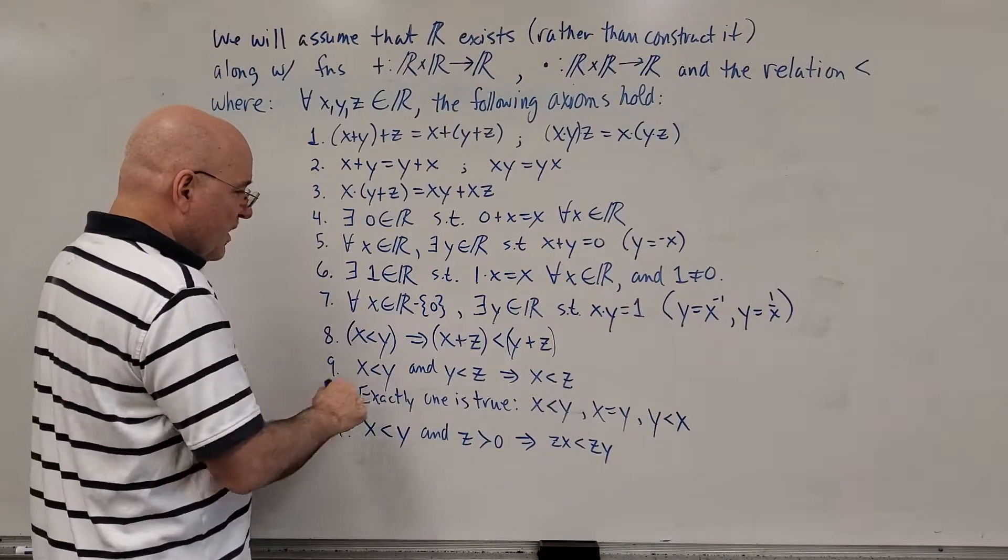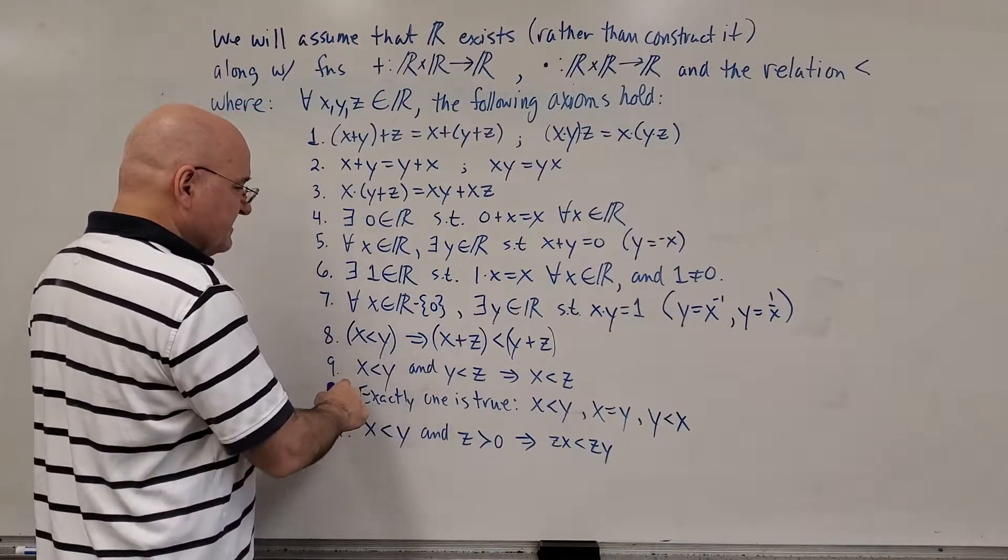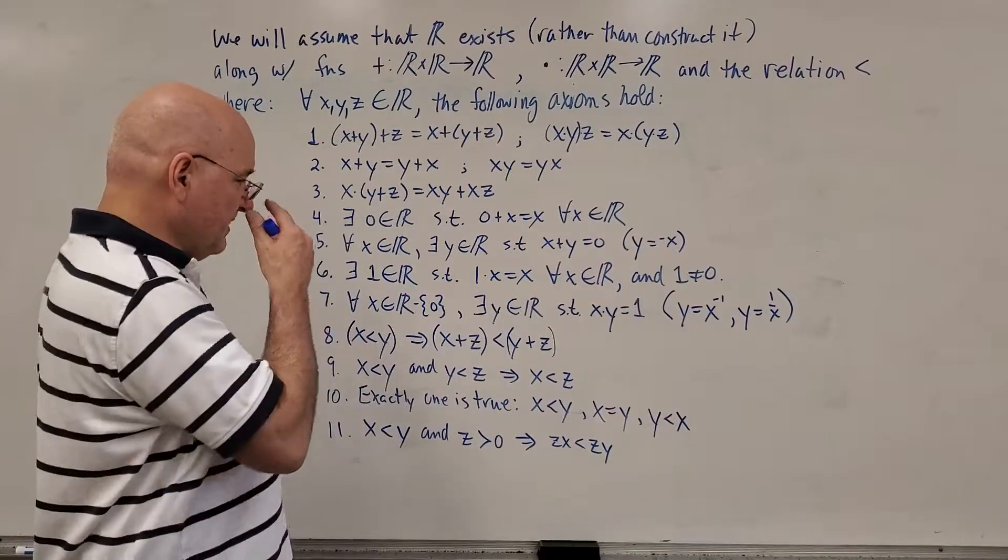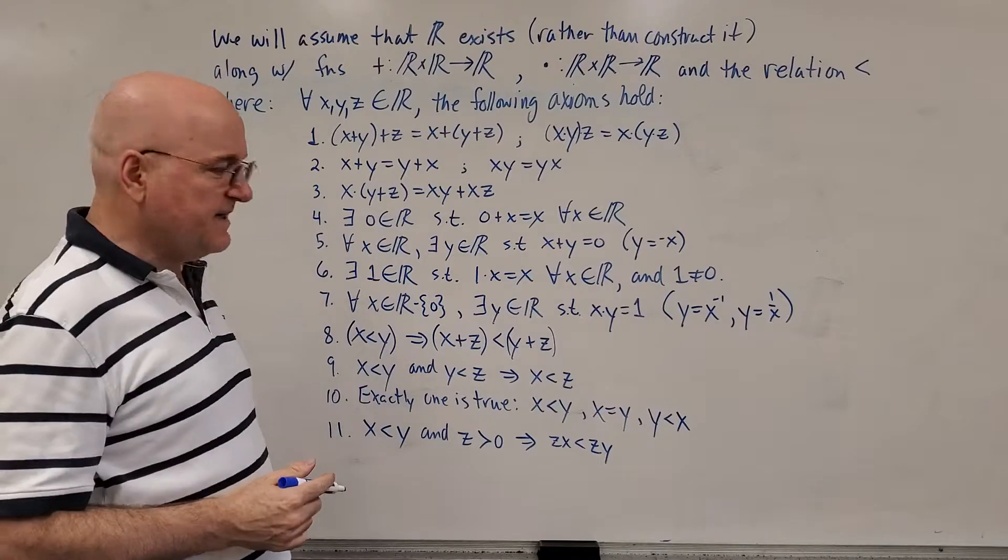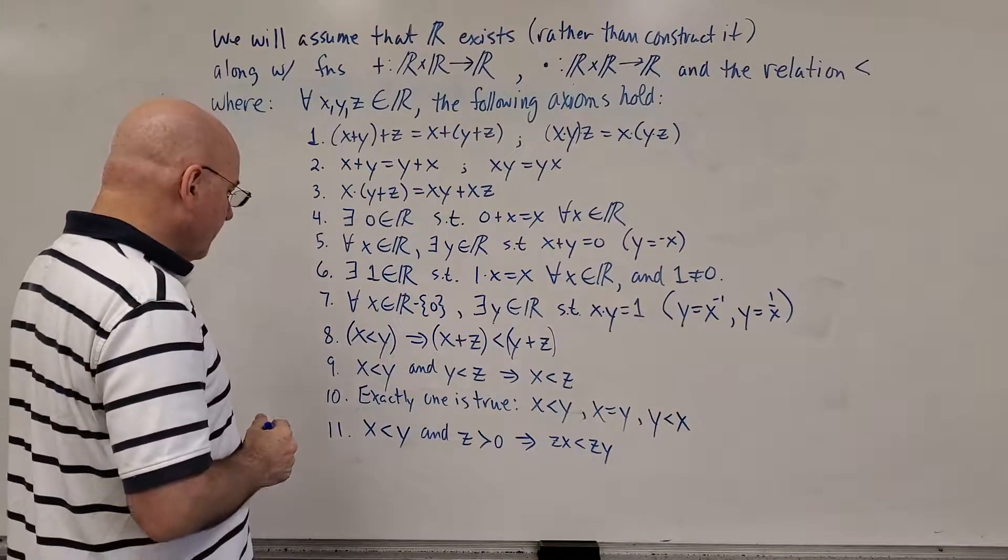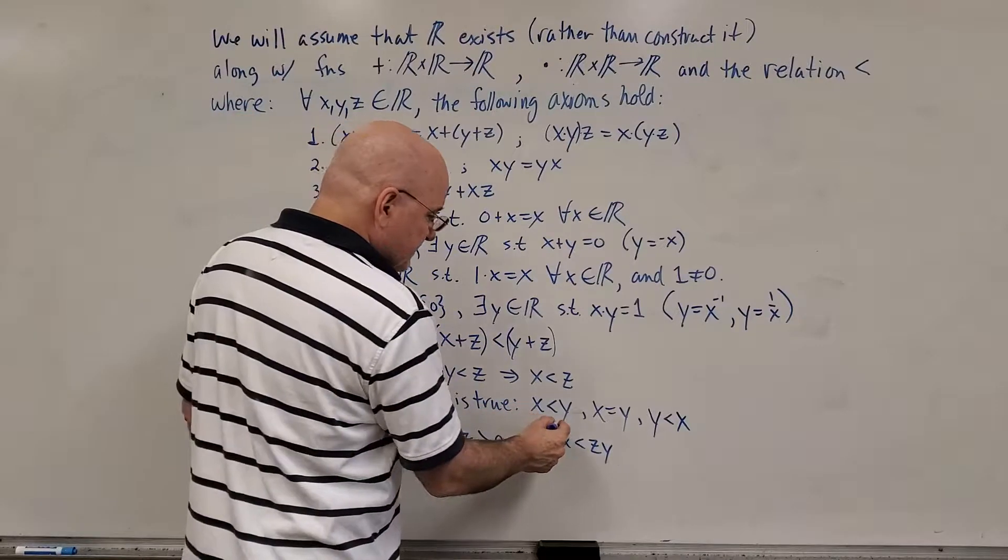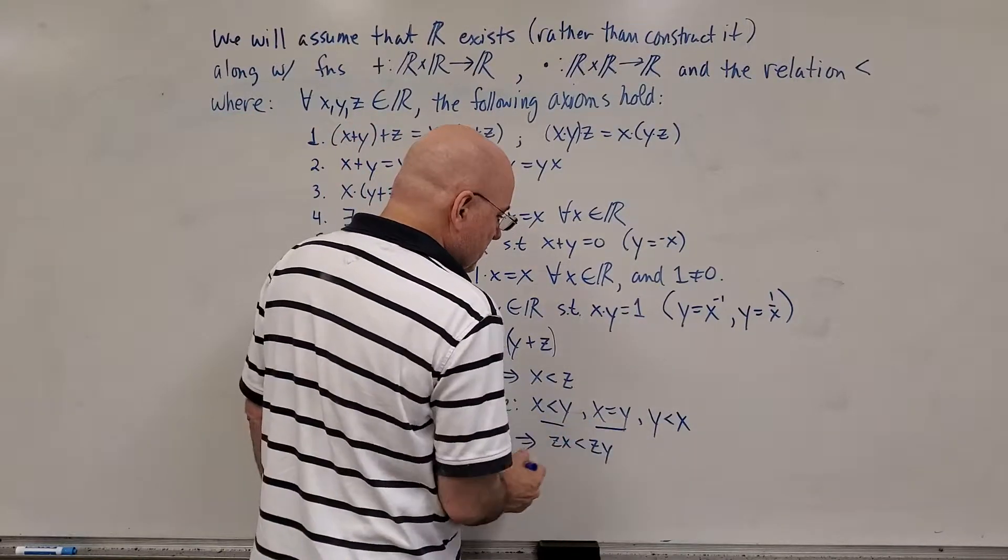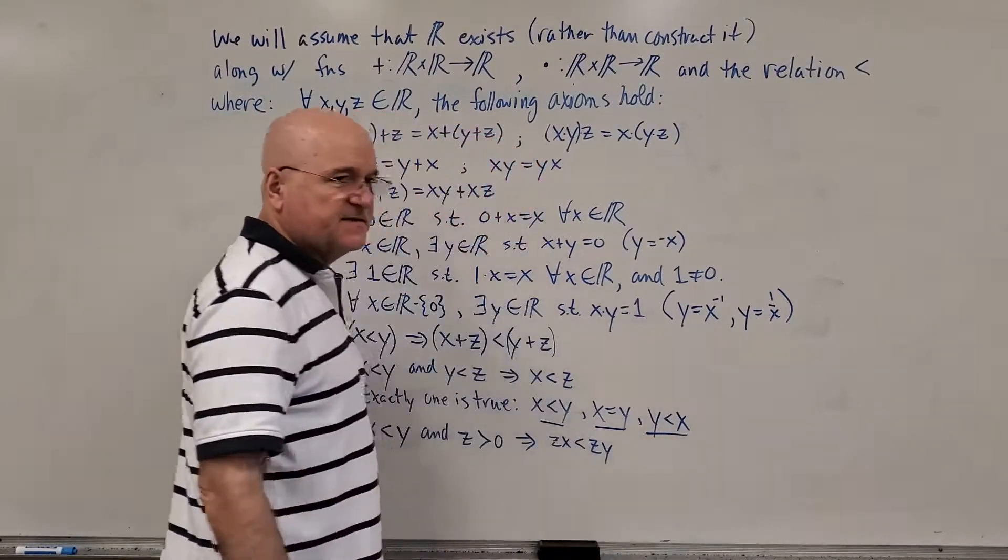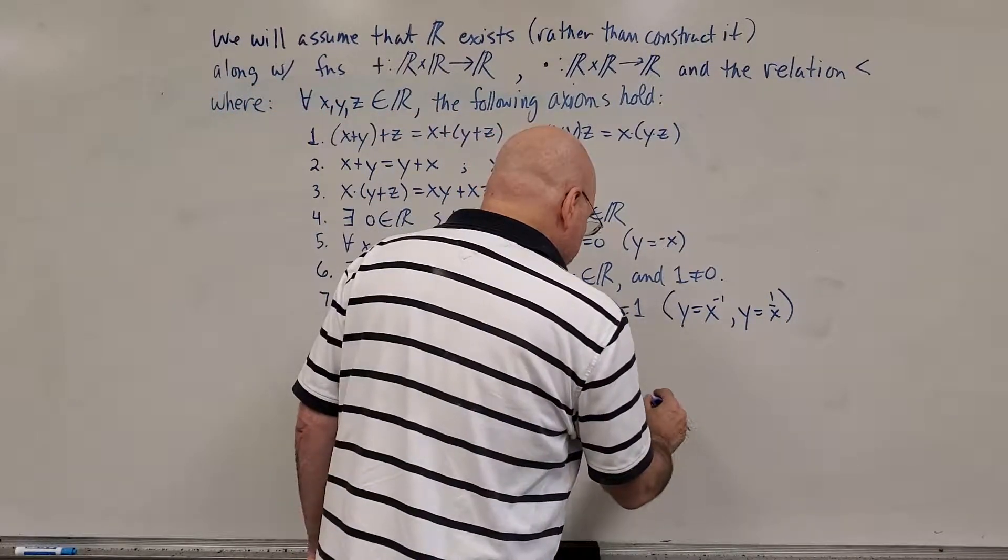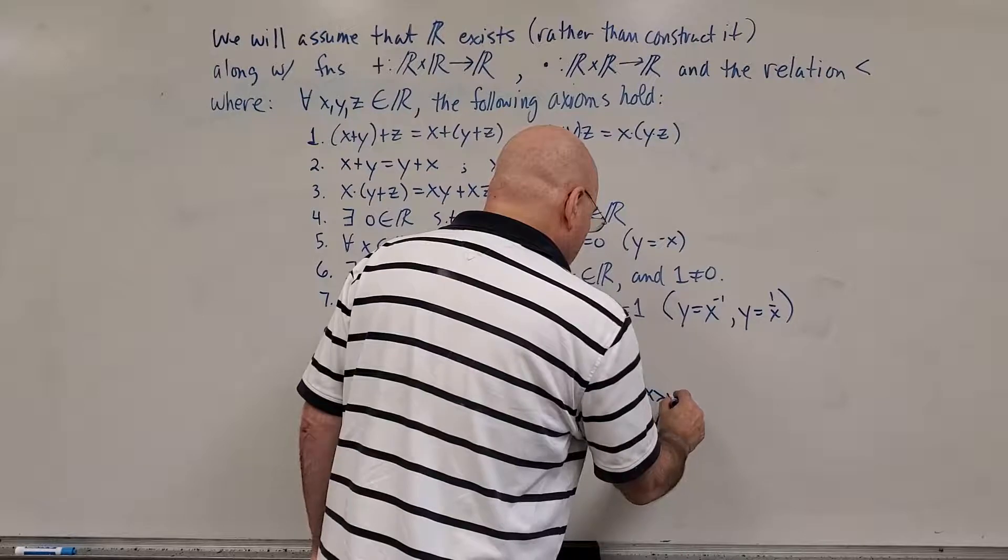X less than y and y less than z implies that x is less than z. That would be like the transitive property of inequality or transitive property of less than. Number 10. Exactly one of these is true. X is less than y or x equals y or y is less than x. And you know what that means. We can also write this as x greater than y.